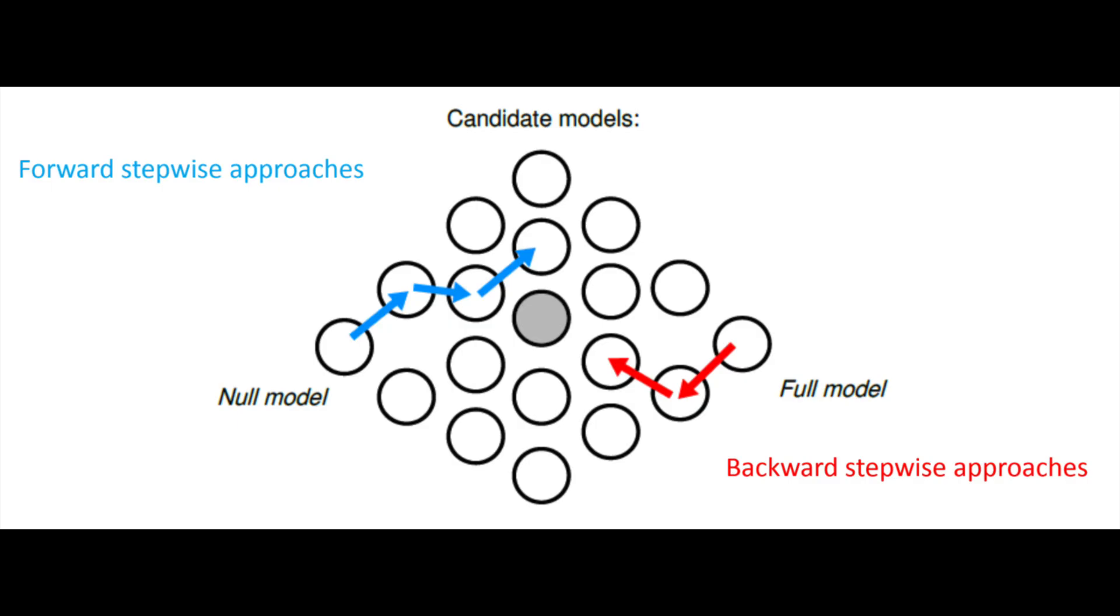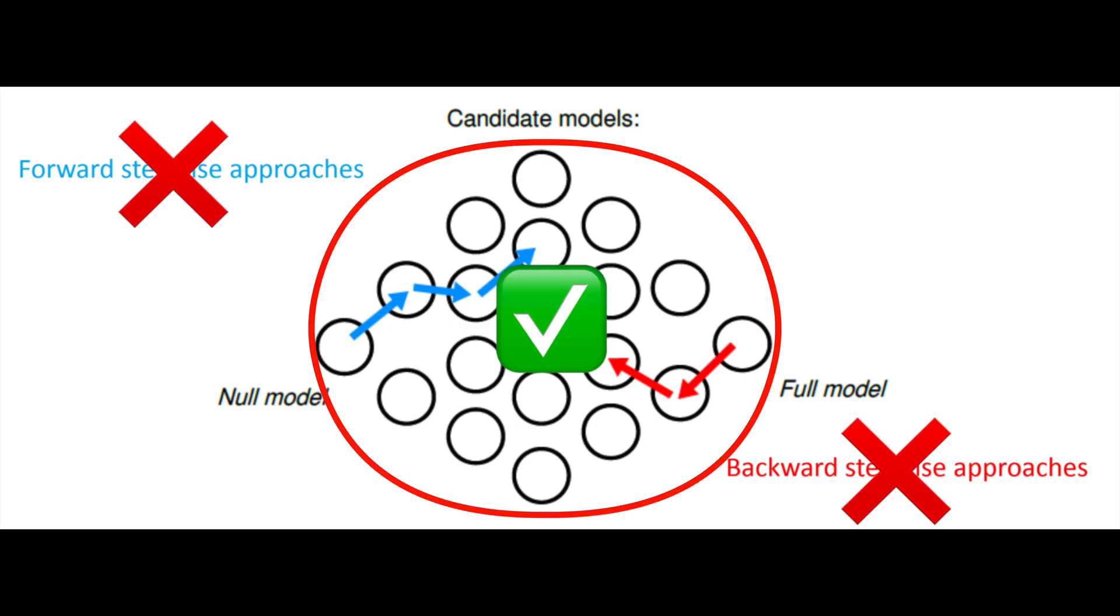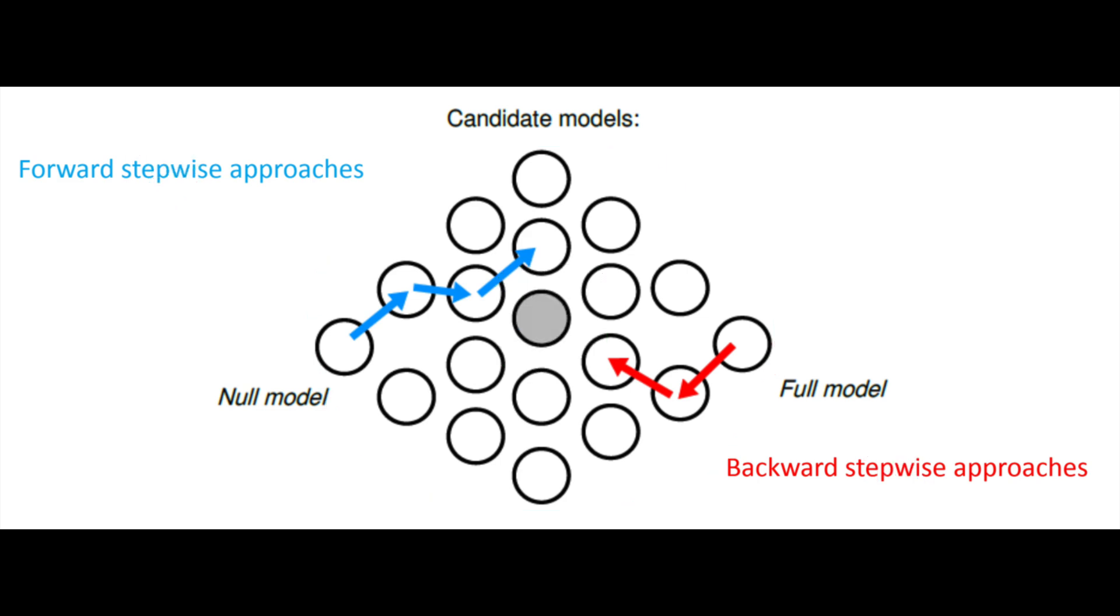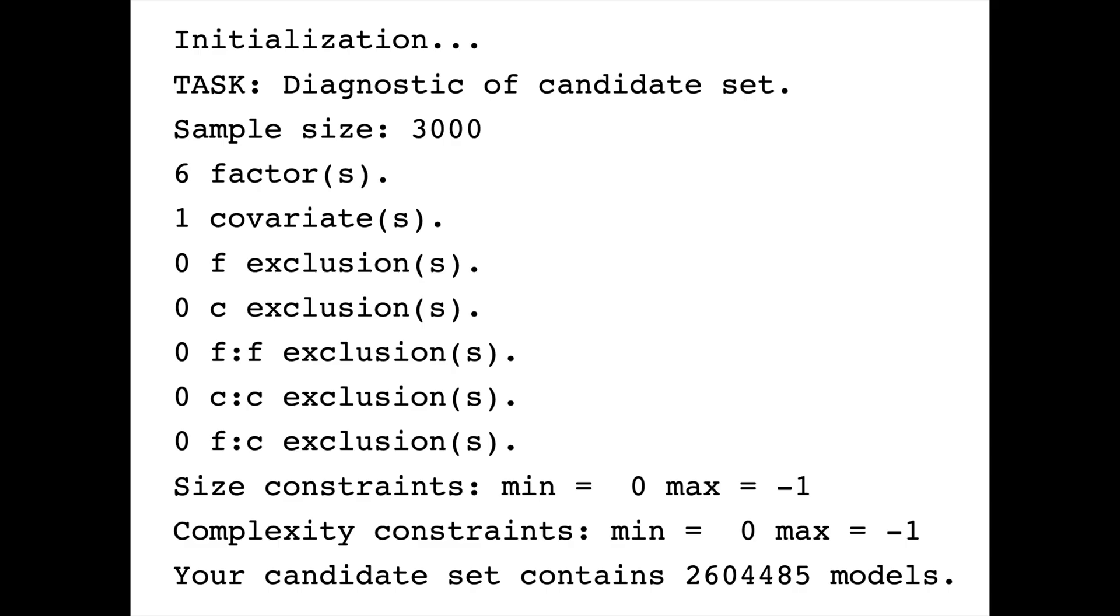That's why we need to create all possible models instead of using stepwise selection. And we need to compare models using information criteria instead of R-squared. And while brute force approach is great,